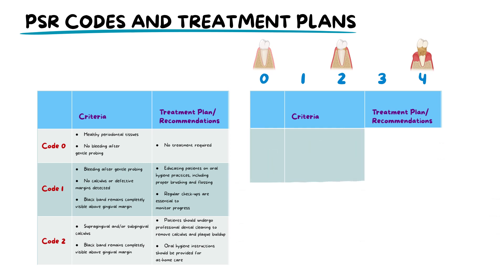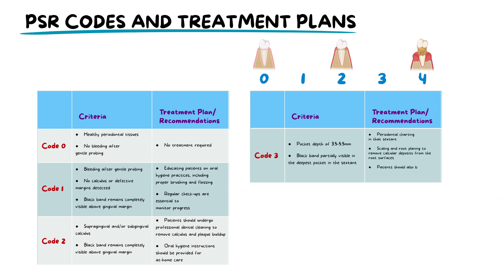Code 3 indicates a pocket depth of 3.5 to 5.5mm and a partially visible black band on the probe. A comprehensive periodontal examination is necessary, which may include scaling and root planing to remove calculus deposits from the root surfaces. Patients should be scheduled for follow-up and maintenance to monitor progress through periodontal examination.